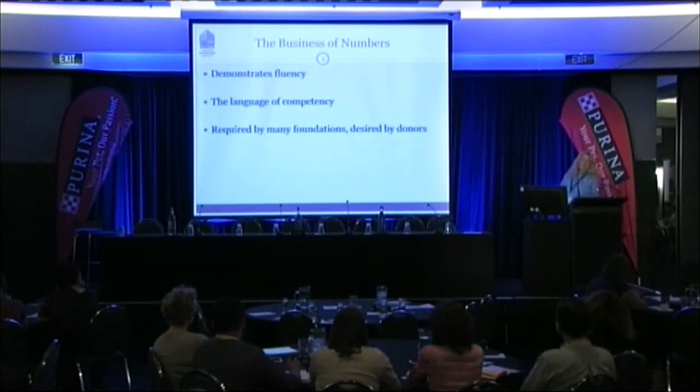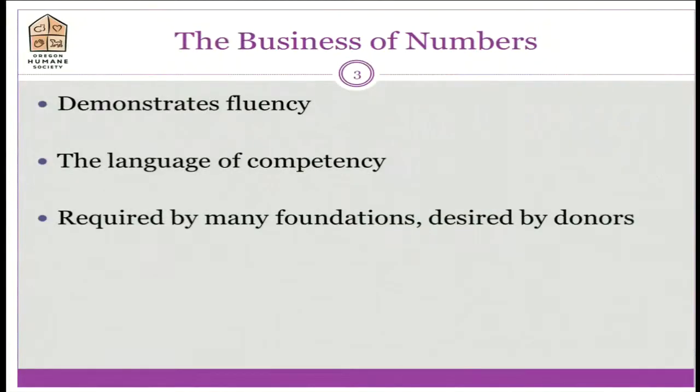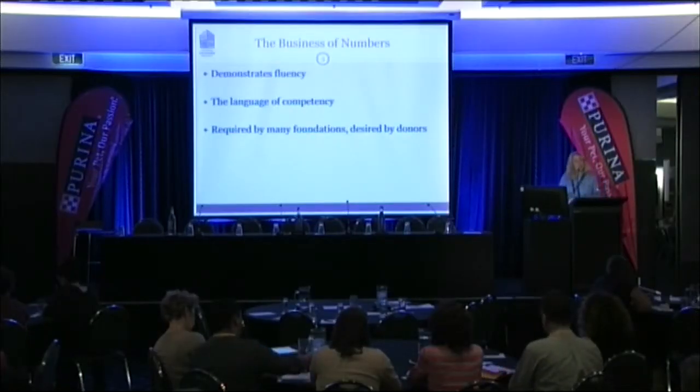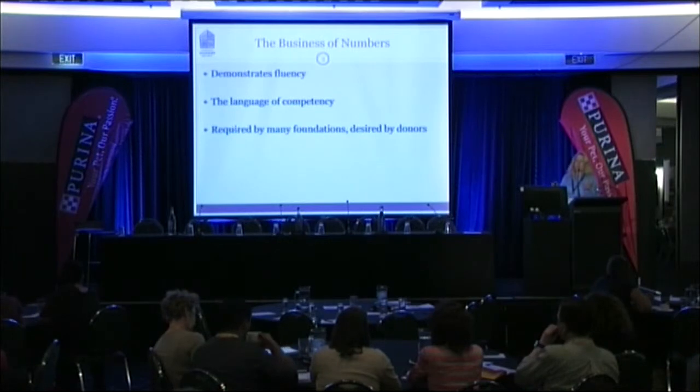This morning I talked about not using numbers when talking for donor cultivation, when you're trying to move the needle. But there is a place for them. When we use numbers, we demonstrate fluency and competency. People get impressed when you know your rate of change, your live release rate, where you are and where you're going. It's required by many foundations. Some donors desire it, though most want to hear about Fluffy or Spot. If it's not earth-shattering, I'd stick to telling stories.